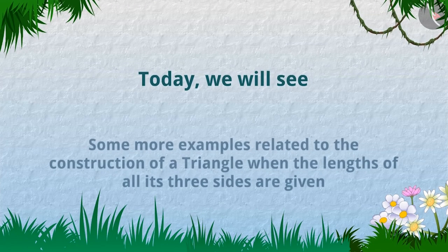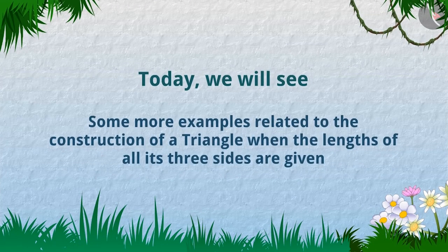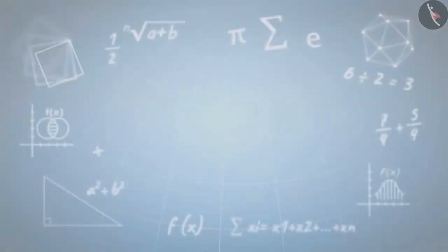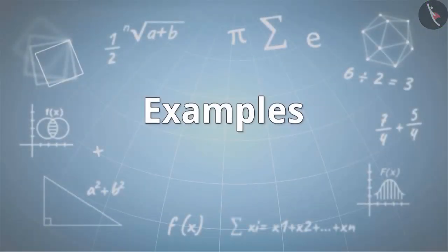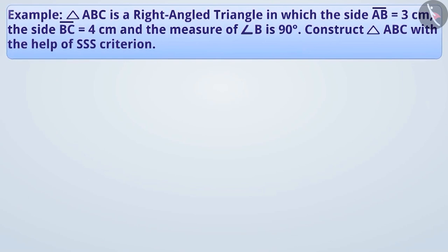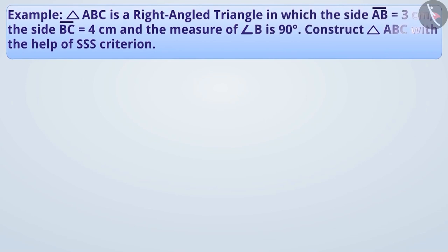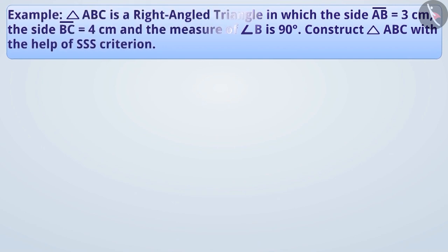Today, we will see some more examples related to the construction of a triangle when the length of all its three sides are given. Triangle ABC is a right-angled triangle in which the side AB is equal to 3 cm, side BC is equal to 4 cm, and the measure of angle B is 90 degrees. Construct triangle ABC with the help of the SSS criterion.